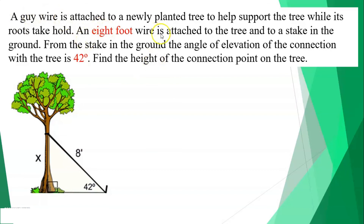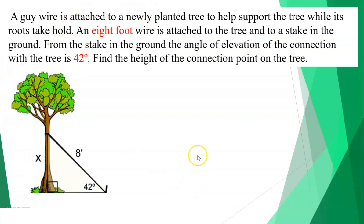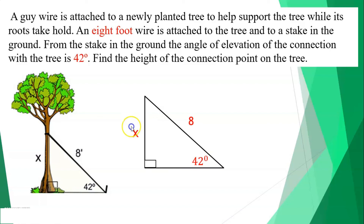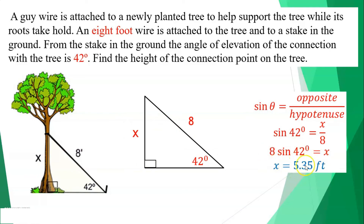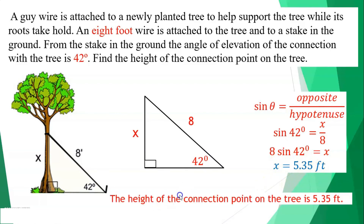An 8-foot wire is attached to a newly planted tree and staked to the ground. The angle of elevation from the stake to the connection point on the tree is 42 degrees. Find the height of the connection point. Using sine: sin(42°) = x/8. Cross-multiplying gives x = 8 × sin(42°) ≈ 5.35 feet.